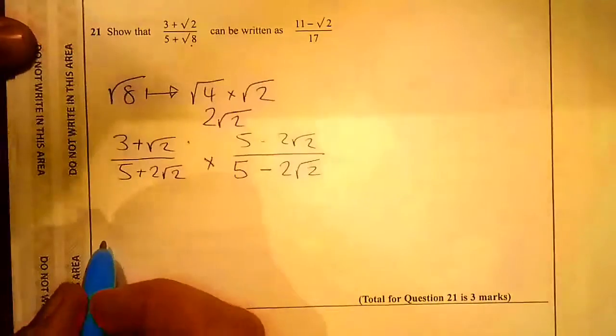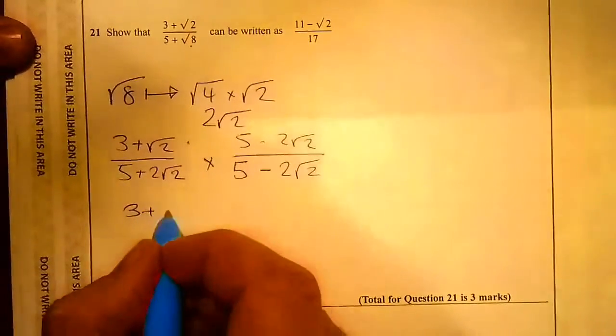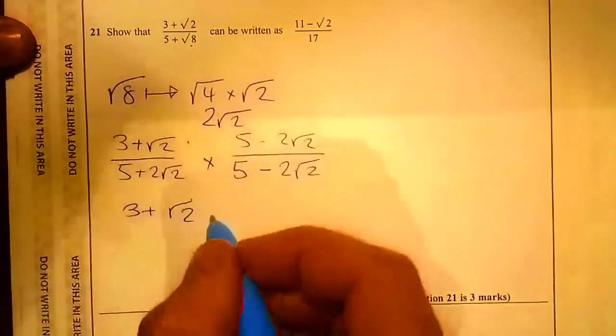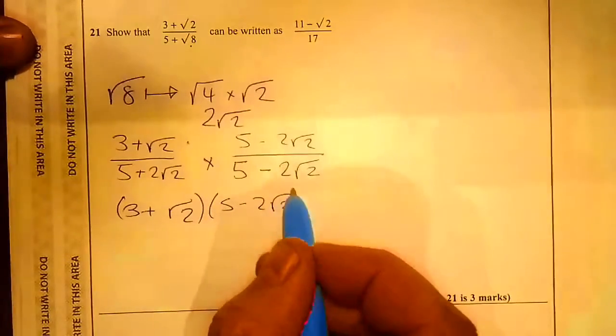I'll do the numerator first. The numerator is (3 + √2)(5 - 2√2).